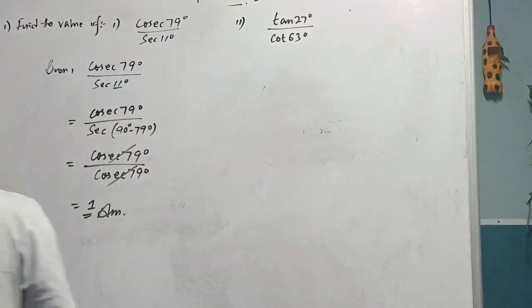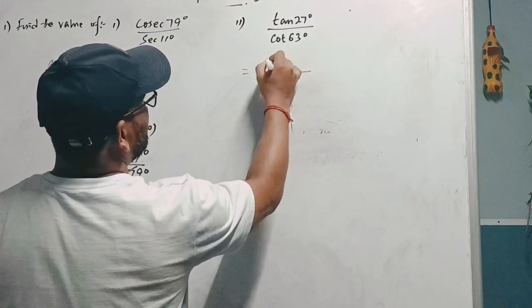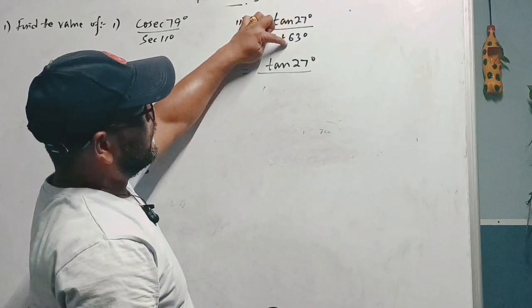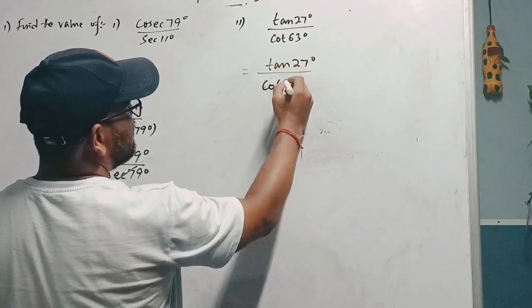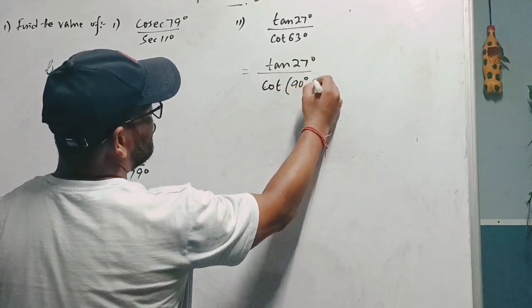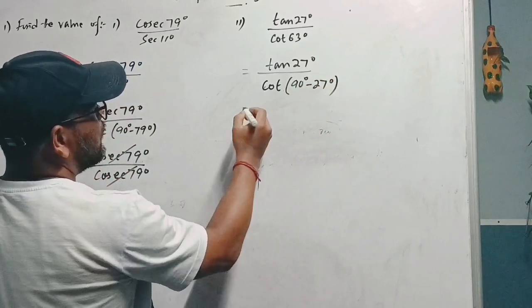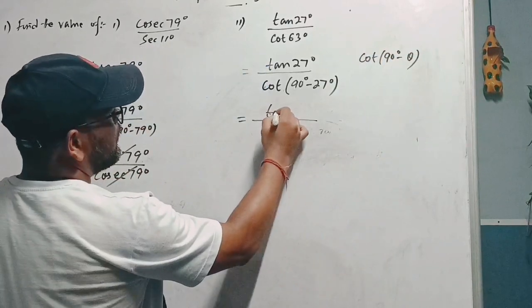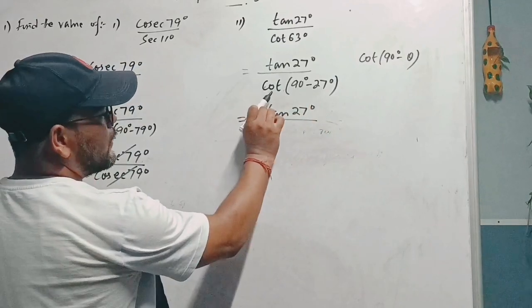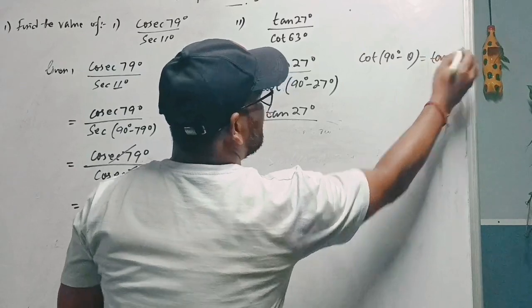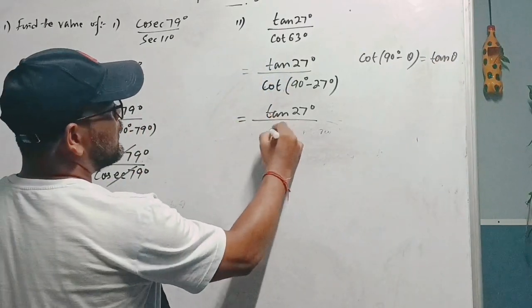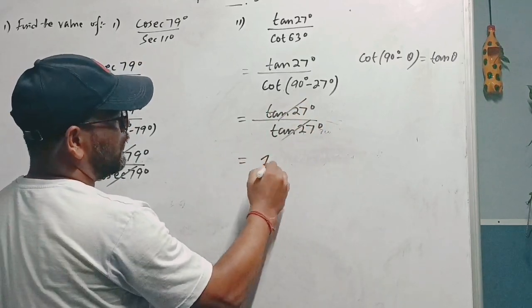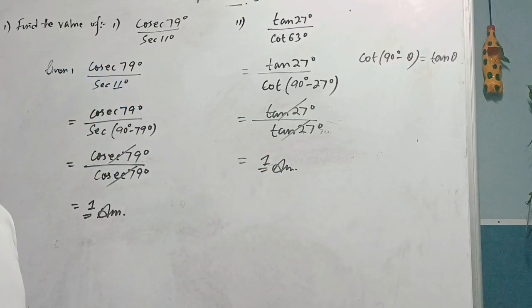Let's try one more question. The question gives tan 27°. Notice that 27 + 63 = 90°, so 63° can be written as 90° − 27°. Using the formula cot(90° − θ) = tan θ, we apply it here: cot(90° − 27°) becomes tan 27°. So tan 27° equals tan 27°. It is very easy.